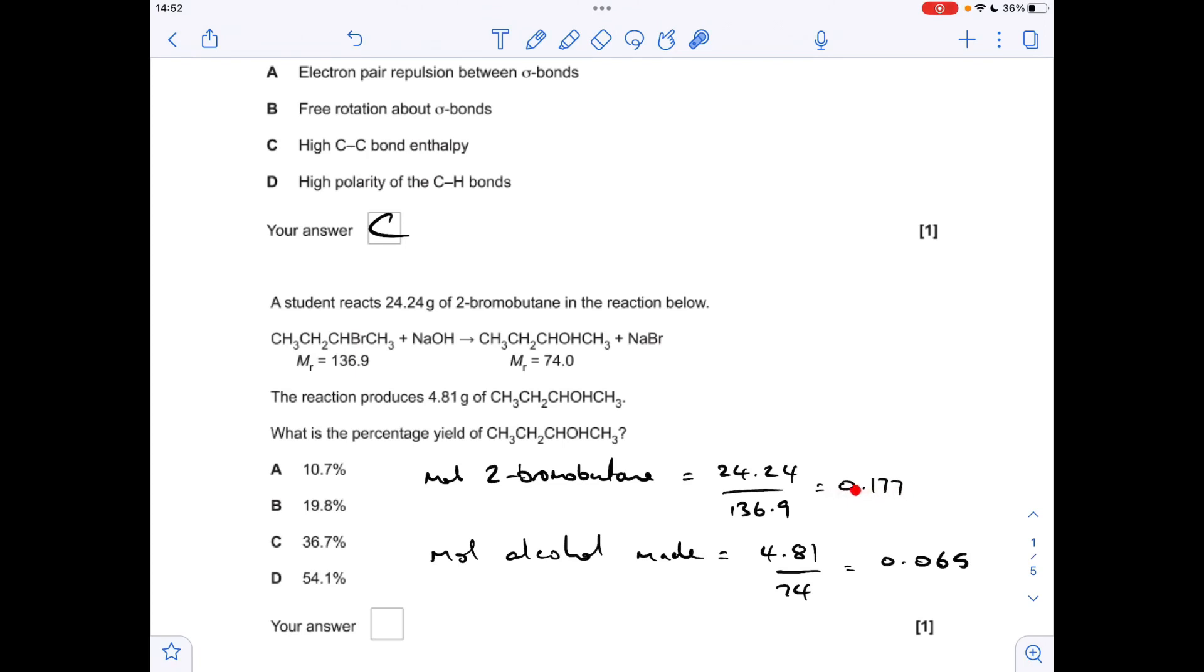So that's another mass over MR and we get 0.065. We expected to make that many moles but we only made that many moles, so the percentage yield is the actual over the expected multiplied by 100, which comes out at 36.7%. So the answer was C.